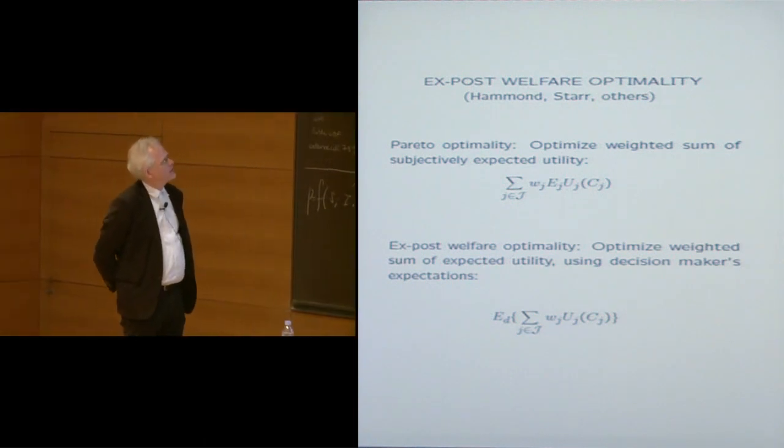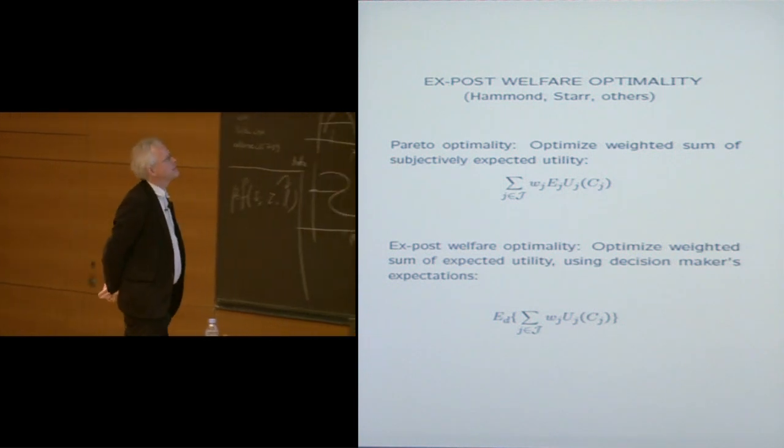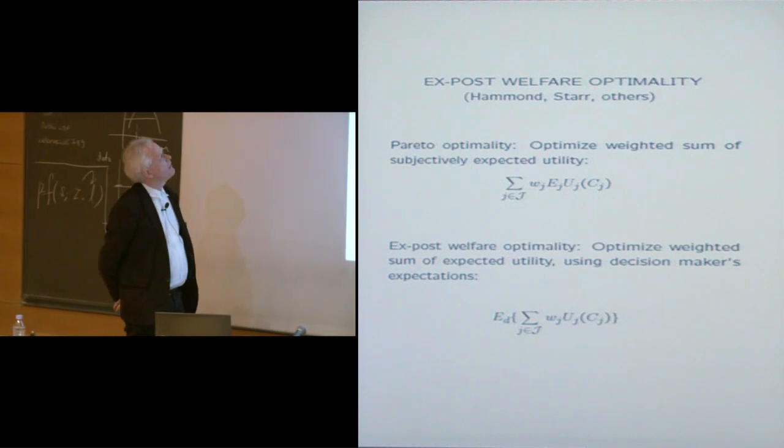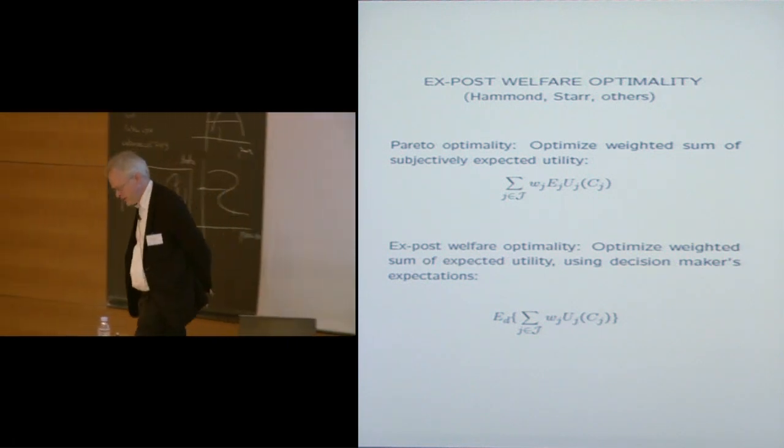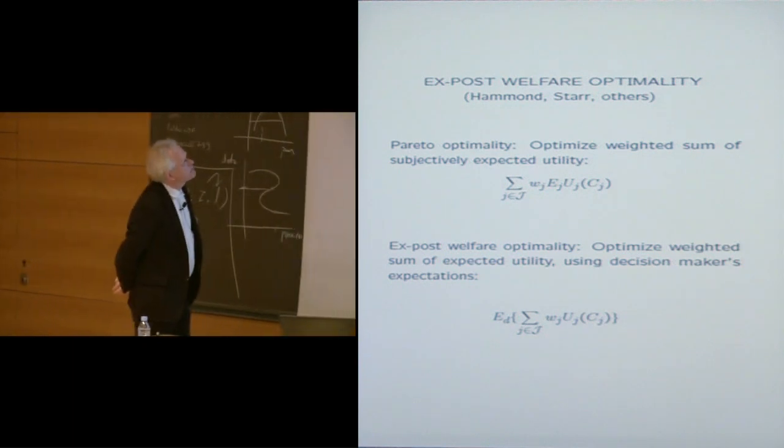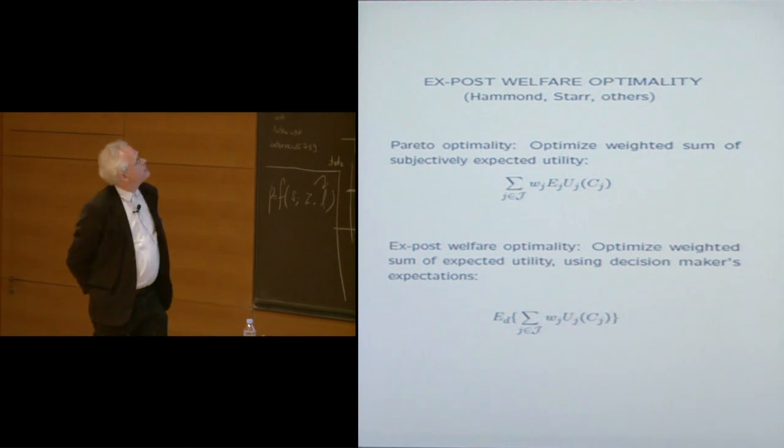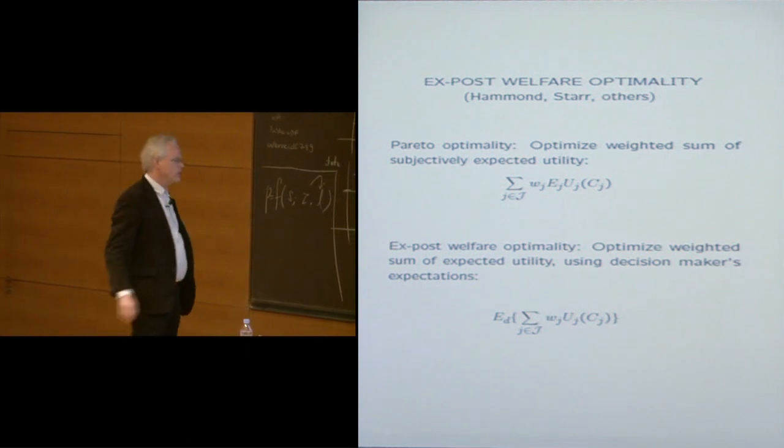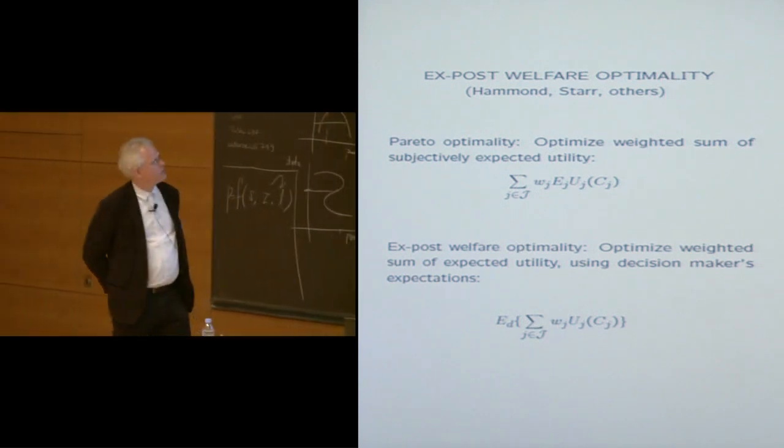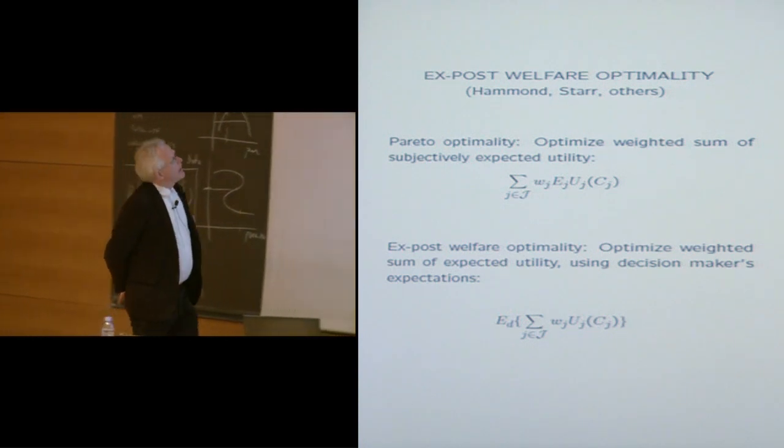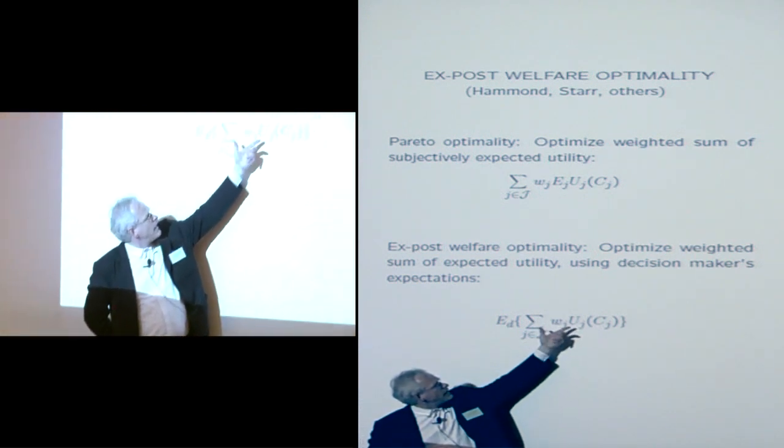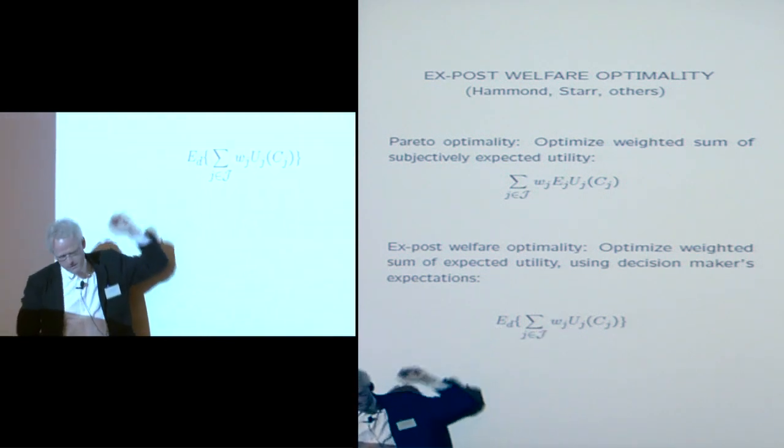So the easiest way to present Pareto optimality in the context of what I'm doing is as a weighted, possibly unweighted sum of subjectively expected utility, but here we have individual expectations, that's the E_j. So each agent j has its own expectations about what's going to happen in the future, what will be the consequences of actions, and so on. Ex-post welfare optimality, and that concept originates with Hammond who, in a certain sense, relies on work by Ross Starr and who was further inspired by other people.